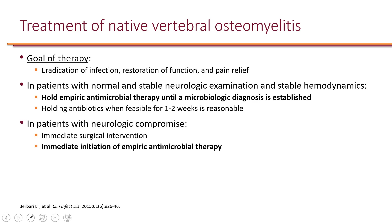In patients with neurologic compromise — for example, those who have paralysis because the spinal cord is involved — it is recommended to make immediate surgical intervention as well as immediate initiation of empiric antimicrobial therapy. This means we should still attempt to get cultures, but we do not have to wait for the culture results to come back. We can start empiric therapy based on the suspected organism.